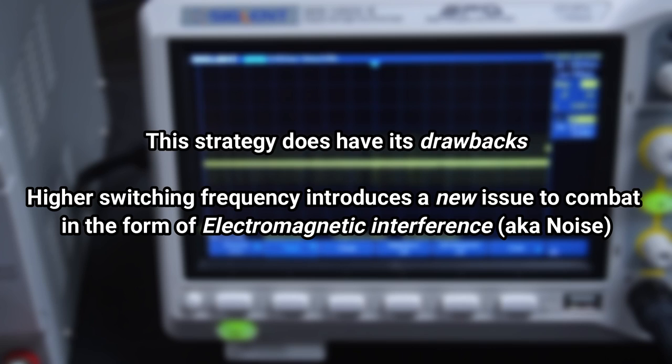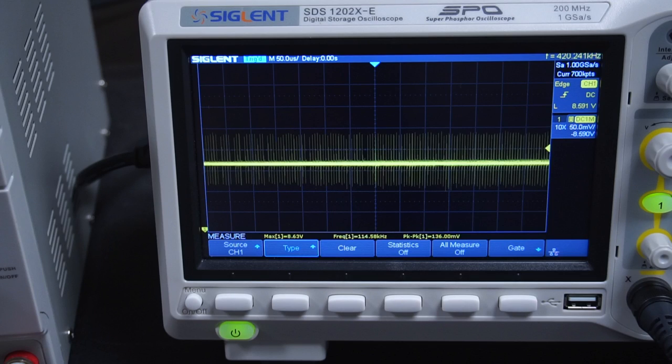Higher switching frequencies introduce a new issue to combat in the form of electromagnetic interference aka noise. This is what noise can look like. If I draw your attention to the thick yellow line across the screen this is desirable smooth DC power. However you'll notice all these thin vertical spikes. This is unwanted noise and in a buck converter circuit it can be a real challenge to completely remove.